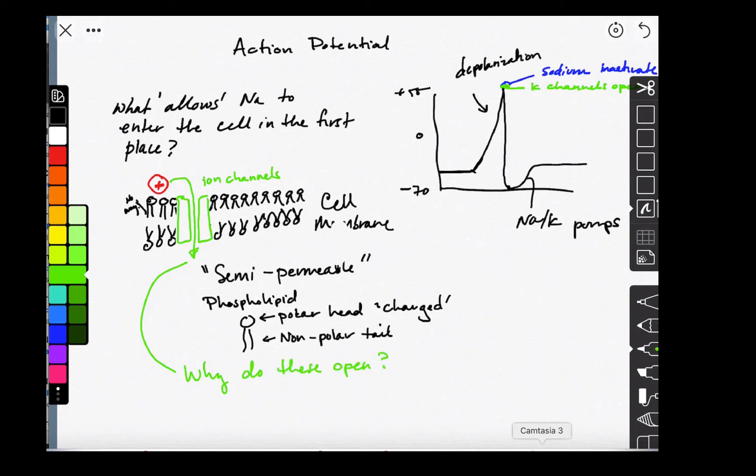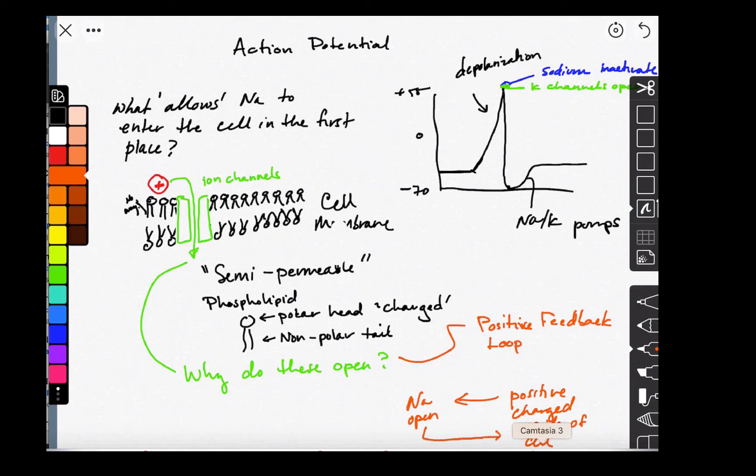And this leads me to a concept called a positive feedback loop. Sodium channels, once they're open, they allow positive in, which makes the inside of the cell more positive. And this is why we call this a positive feedback loop.